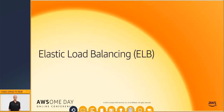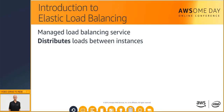With all of that compute power, you are going to need to distribute it. In comes Elastic Load Balancing, or ELB. ELB is a managed load balancing service that distributes incoming application traffic across multiple Amazon EC2 instances. There are currently three product offerings: the Application Load Balancer, the Network Load Balancer, and the Classic Load Balancer.